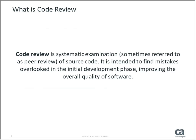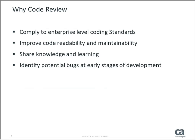What is code review? Code review is a systematic examination of source code, sometimes referred to as peer review. The main purpose is to find mistakes overlooked during the initial development phase, to improve the overall quality of our software. Why code review? To adhere to coding standards, to improve code readability and maintainability, to share knowledge and learning among the team, and to identify potential bugs at early stages of development.